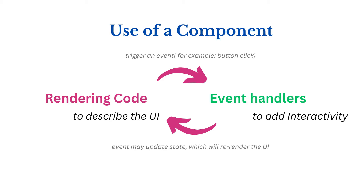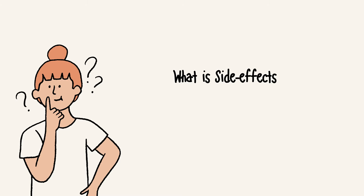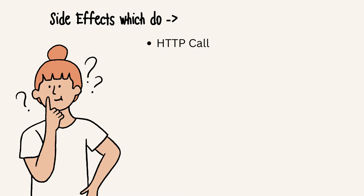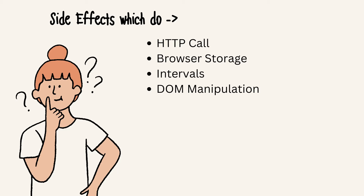Event handlers may contain some side effects. For example, making an HTTP call — clicking on a button and doing an HTTP call is a side effect. Side effects can be anything happening inside your application which is not related to UI rendering. For example, making an HTTP request to a server: when we send a request, we are not rendering anything on the UI. We will display it when we get the response. Another example could be storing something in browser storage, using intervals, or doing DOM manipulation. These are all examples of side effects.